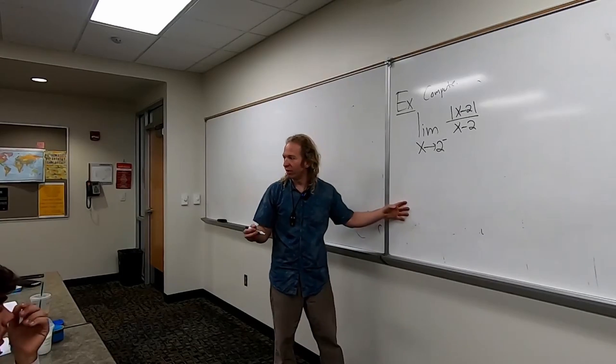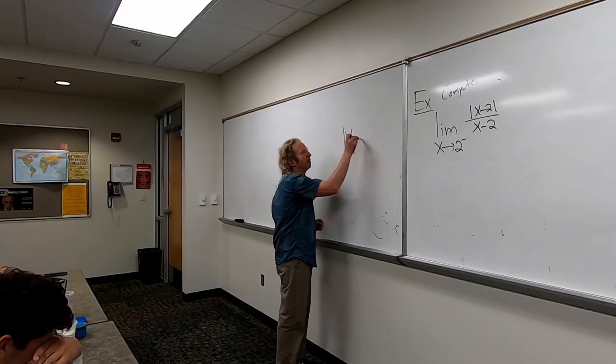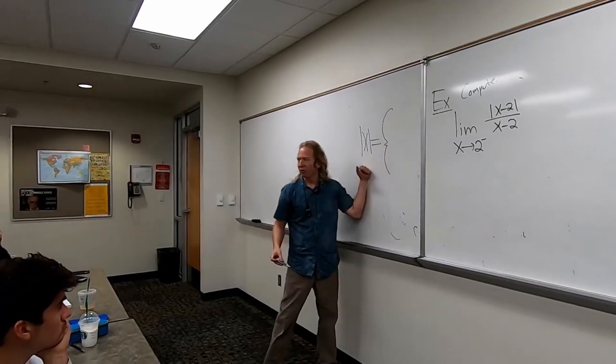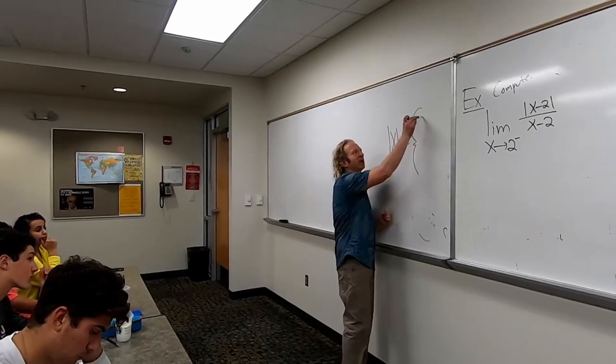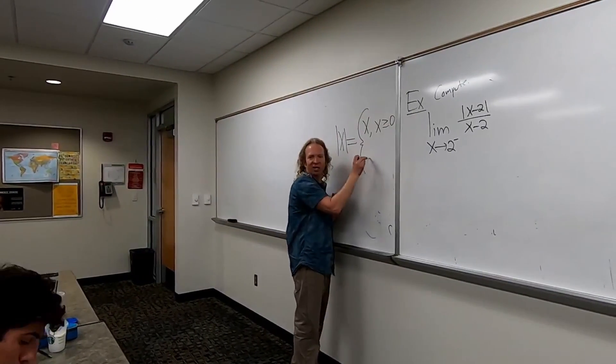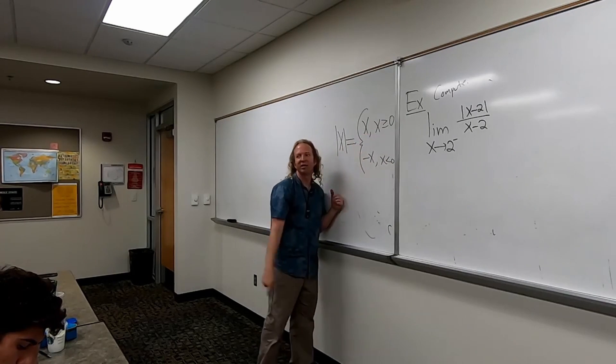You have to use the definition, right? So I don't know if you remember, the absolute value of x, it's a piecewise function. If you don't remember, it's okay, now you know. So it's equal to x if x is greater than or equal to 0, and it's equal to minus x if x is less than 0. It should be an if here, but I didn't write it. It's not necessary.